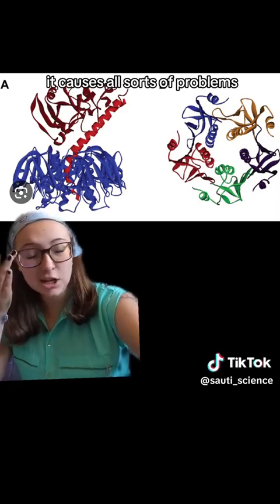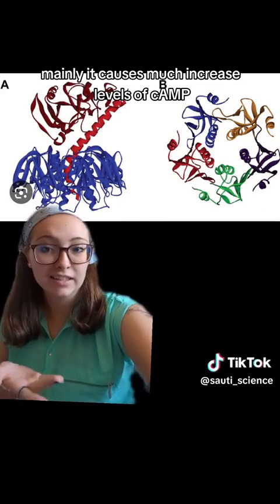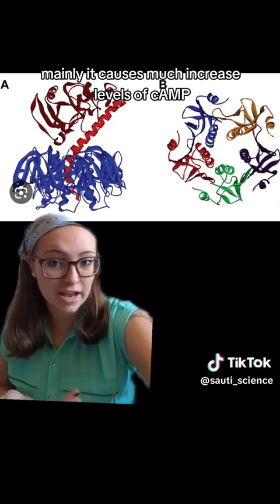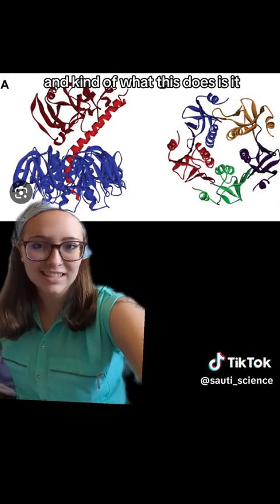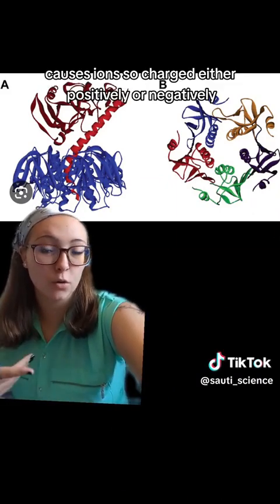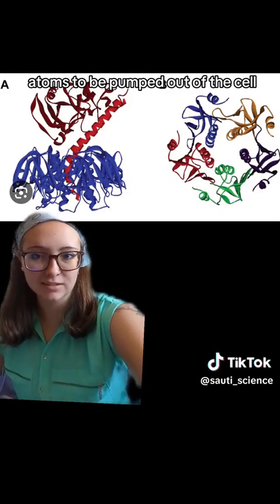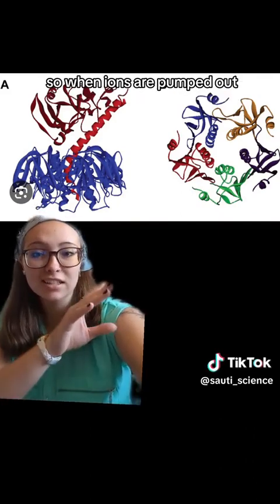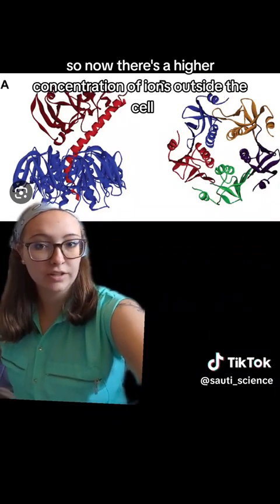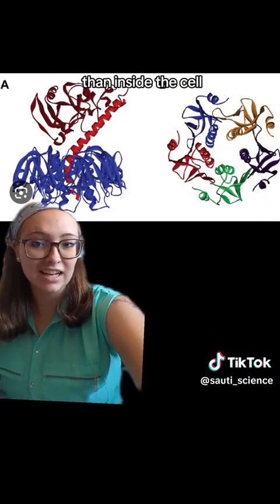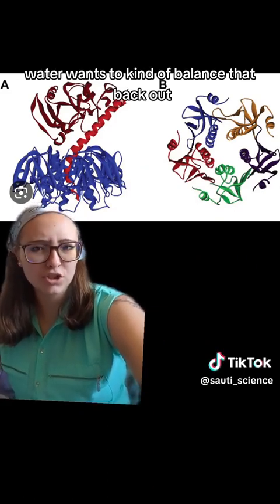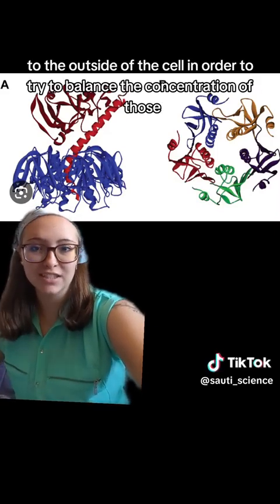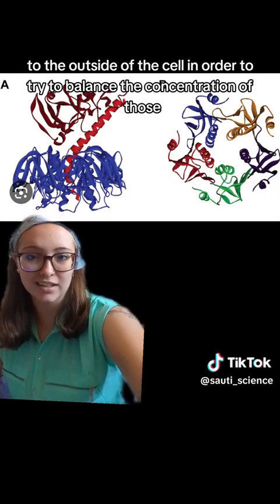Once it's in the cell it causes much increased levels of cAMP. What this does is cause ions — charged atoms, either positively or negatively — to be pumped out of the cell, which has a major effect on the osmotic balance of the cell. When ions are pumped out, the concentration of ions outside the cell increases, so naturally water wants to balance that back out.